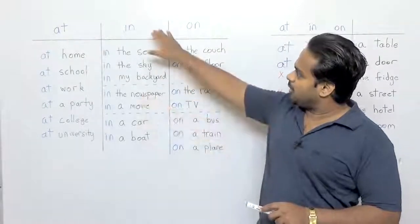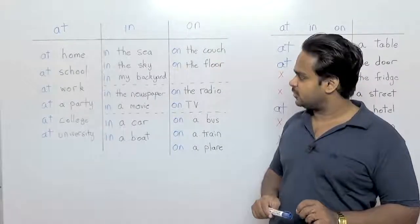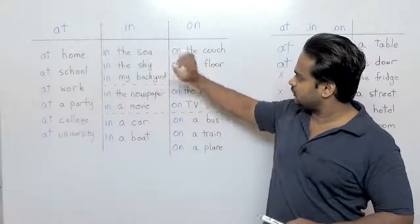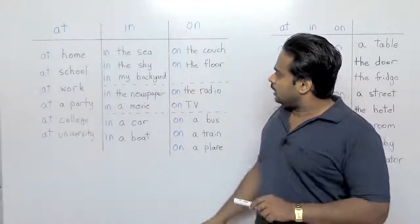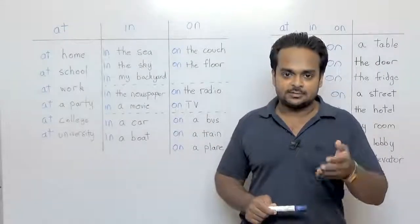Let's now talk about in and on and there are some tricky expressions here. You'll see that I've divided these into three sections. Let's look at the first section. These are some common expressions with in. We talk about fish in the sea, clouds in the sky.